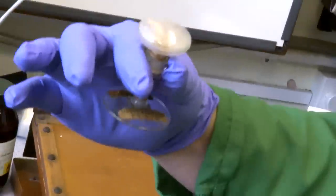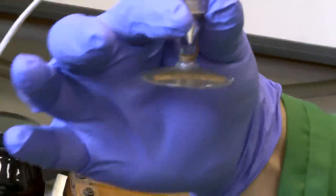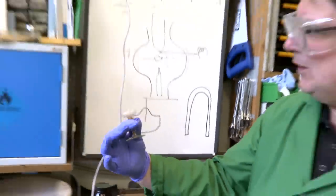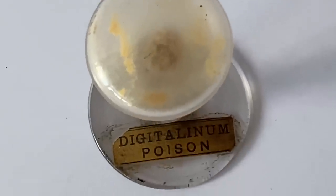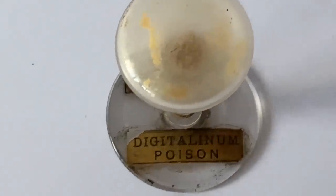So this is one of those. This is digitalinium poison and it's in this really unusual, presumably, I don't know, early 20th century sample vial here.